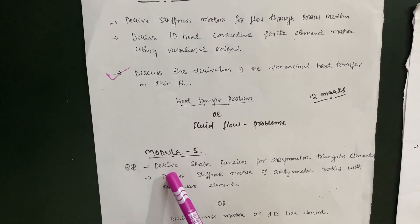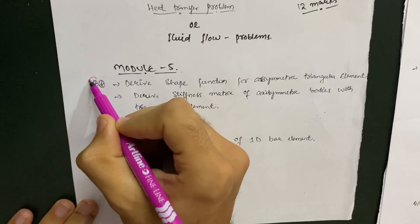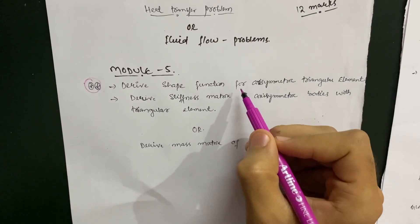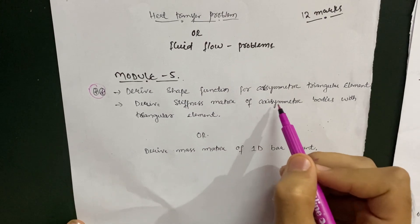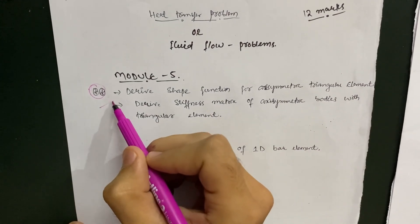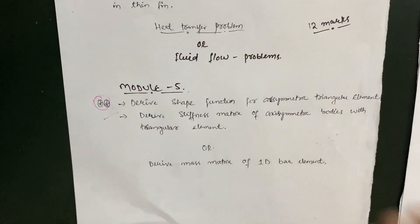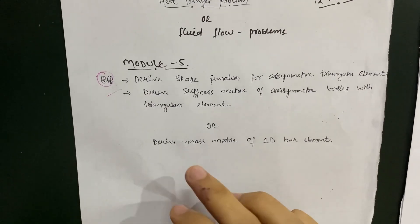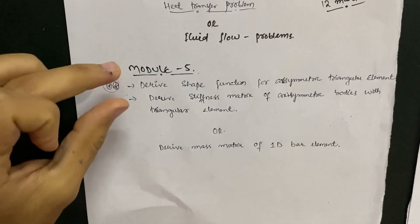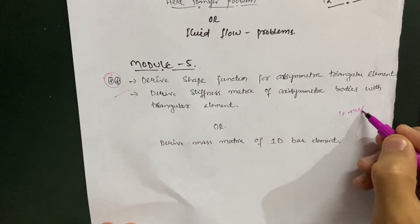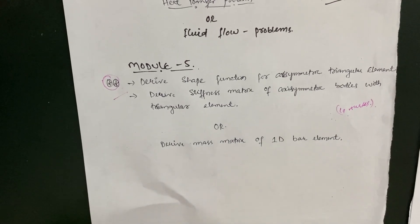In Module 5, the key topics are: derive the shape function for an axisymmetric triangular element — this is definitely asked in every VTU examination, so mark it as a double-star question — and derive the stiffness matrix of axisymmetric bodies with triangular elements. Focus on just these two derivations; there is no need to go through the whole vast syllabus. In the OR part, you can also derive the mass matrix of a 1D bar element, but focus primarily on those two derivations to easily get 10 marks in Module 5.